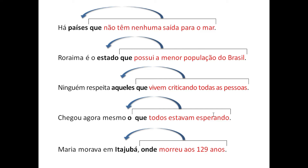Se eu vir todas essas características, todos esses pronomes relativos, eles estão unindo a oração principal à oração subordinada adjetiva. O pronome relativo retoma o substantivo com o qual faz a ligação. Usualmente ele vem após a oração principal, mas pode vir em posição intercalada, no meio dela.